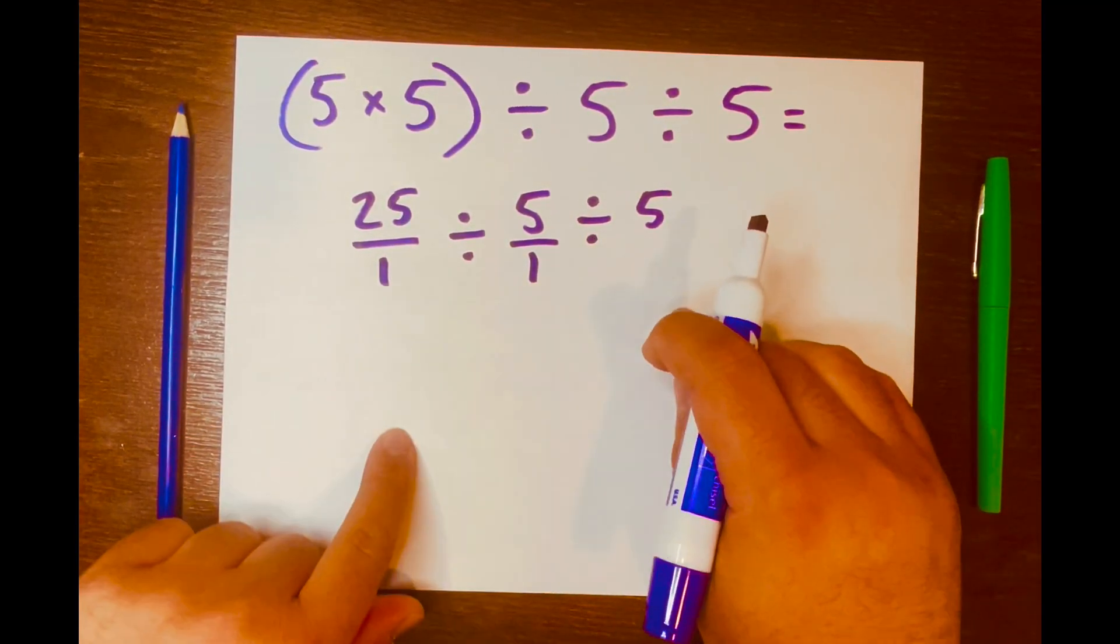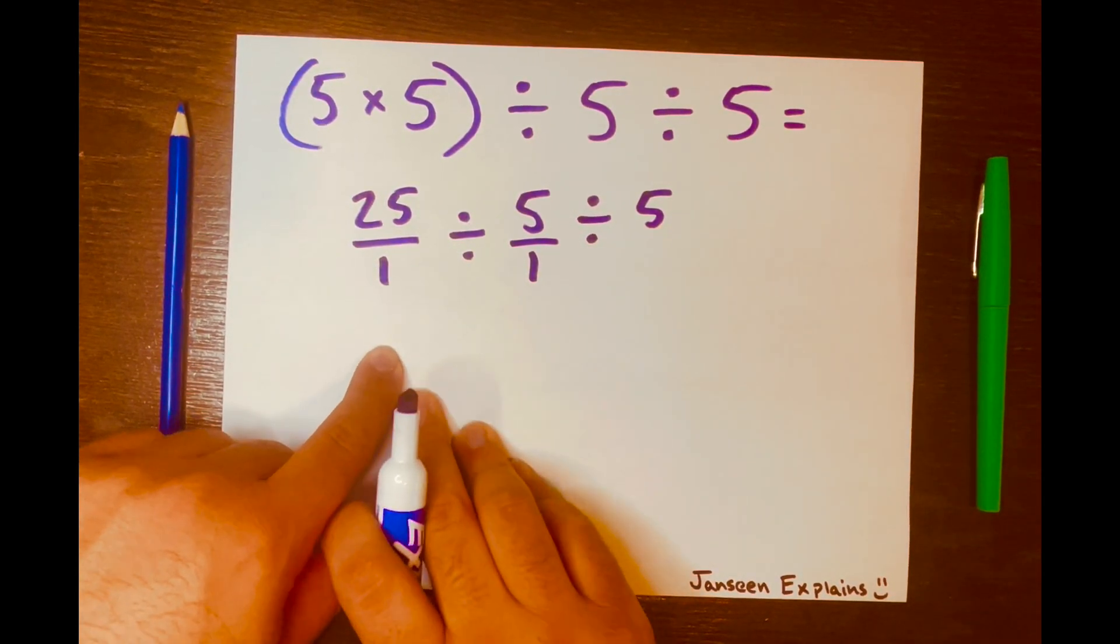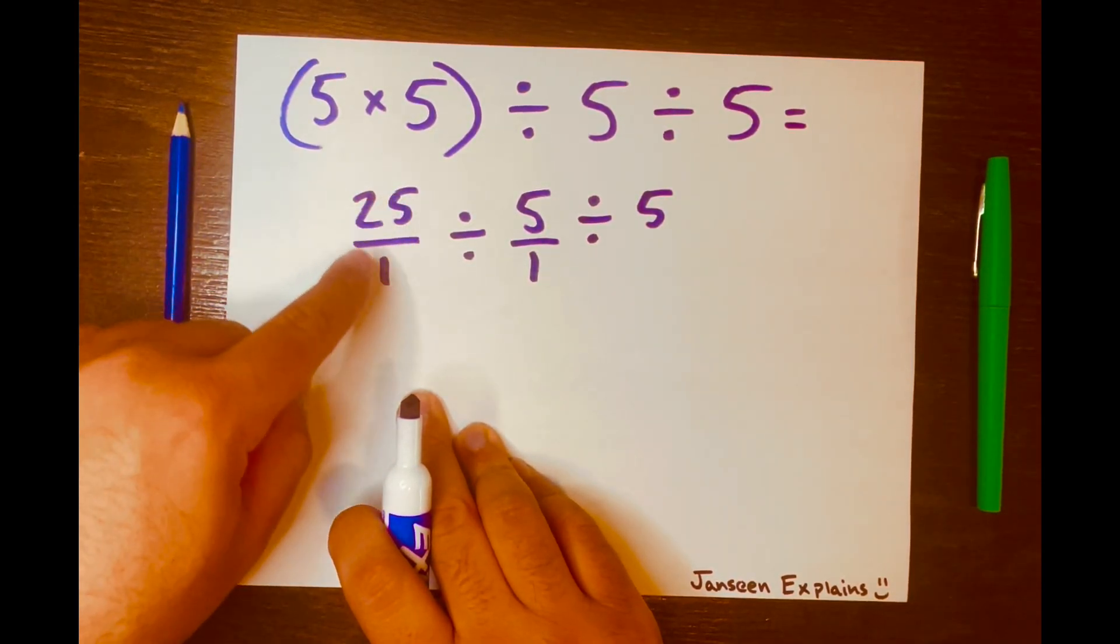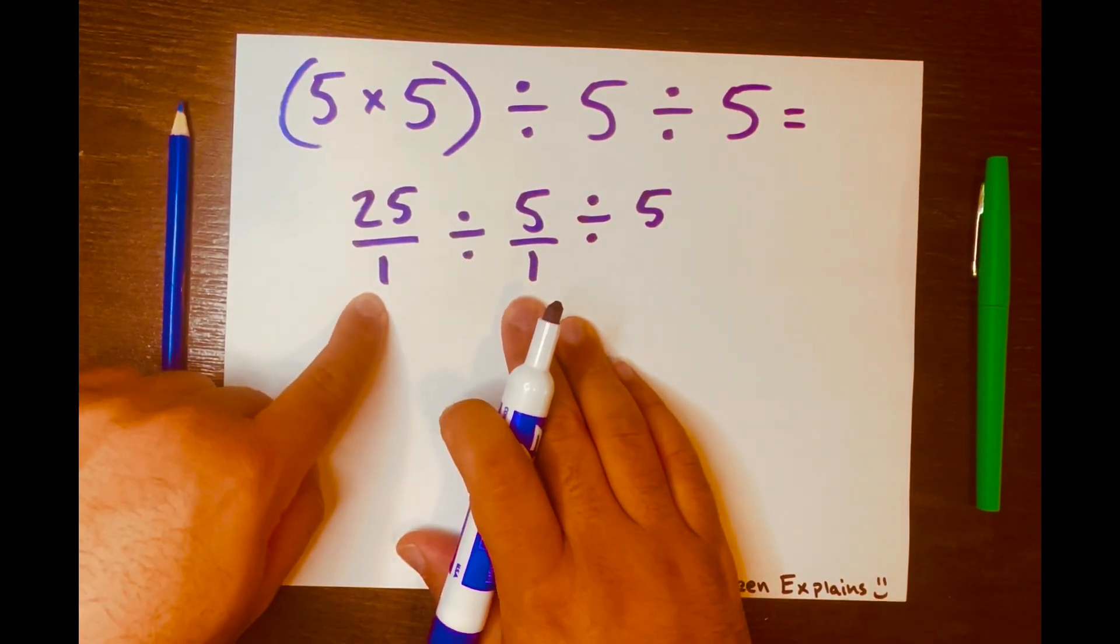But I would like to turn that into a fraction as well. So let's go ahead and tackle 25 divided by 1, or 25 over 1, divided by 5 over 1.